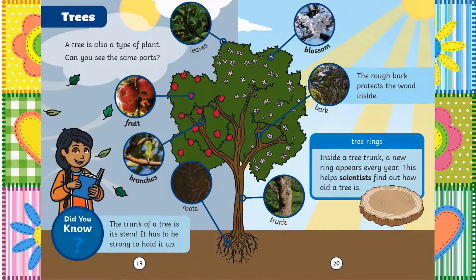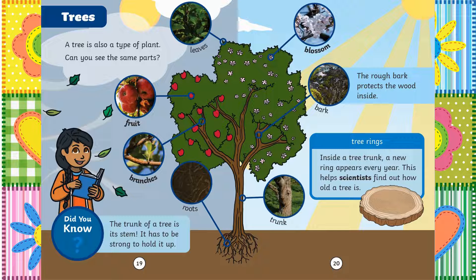Chapter 6: Trees. A tree is also a type of plant. Can you see the same parts? Roots, branches, fruit, leaves, blossom and bark. The rough bark protects the wood inside. Did you know the trunk of a tree is its stem? It has to be strong to hold it up. Inside a tree trunk, a new ring appears every year. This helps scientists find out how old a tree is.